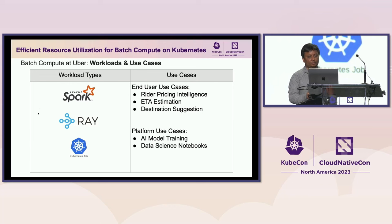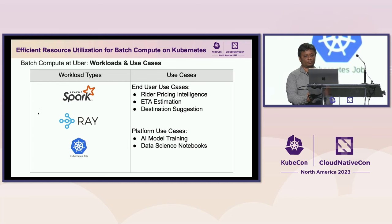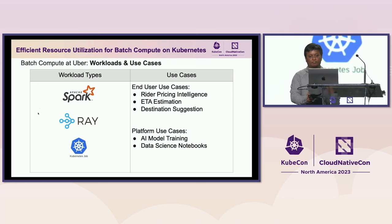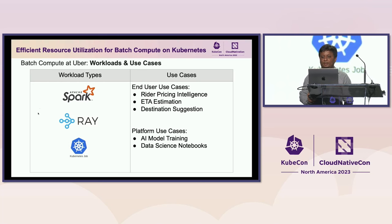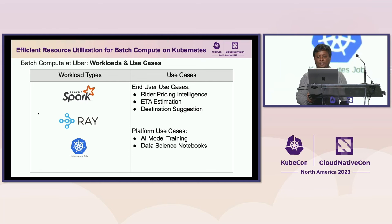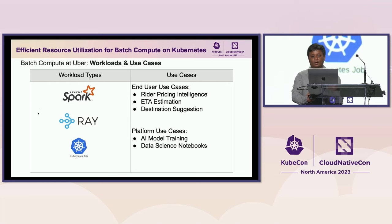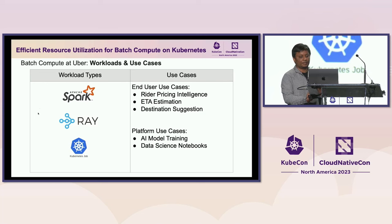Coming to the use cases — at Uber, we have both end-user use cases and platform use cases which are solved through batch workloads. Some of the key end-user use cases are rider pricing intelligence, ETA estimation, destination suggestion, etc. When you see the Uber app and you see the ETAs, those are powered by batch workloads. From the platform team, we solve use cases like AI model training and data science notebooks, also through batch workloads.